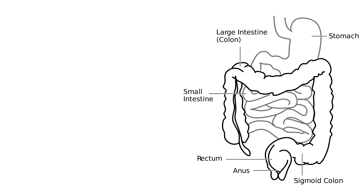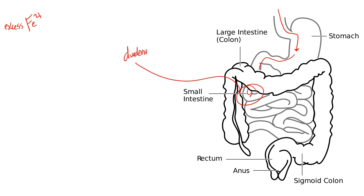First, what is hemochromatosis? We need to understand some general anatomy of the gastrointestinal system and where iron is absorbed. This disease deals specifically with iron — excess iron in the body. Iron is taken in from the small intestine, and specifically the first part called the duodenum is the point of iron absorption, represented as Fe2+.